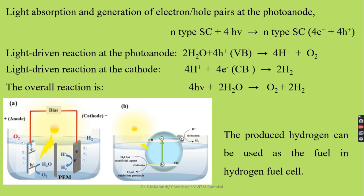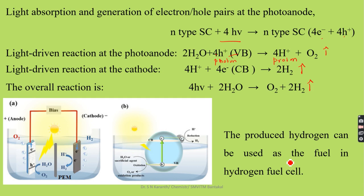In summary: the N-type semiconductor photoanode absorbs photons and generates electron-hole pairs. At the photoanode, water molecules react with holes to generate protons and liberate oxygen. The protons migrate towards the cathode through the proton exchange membrane, take electrons, and evolve hydrogen gas. The overall reaction is water splitting into oxygen and hydrogen, and this produced hydrogen can be used as fuel in a hydrogen fuel cell.